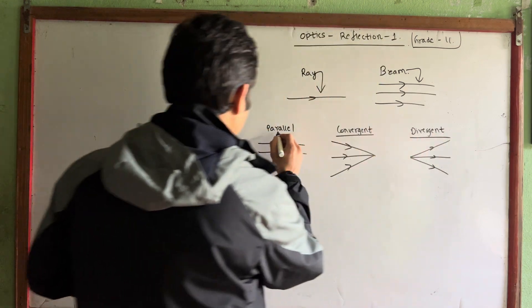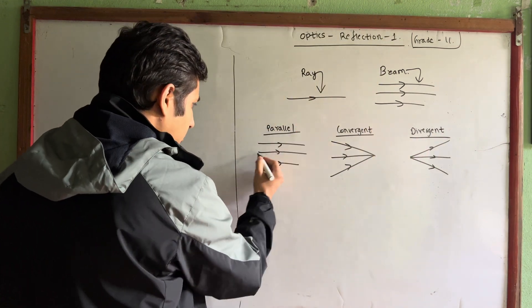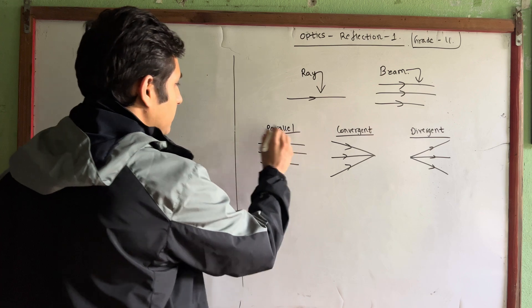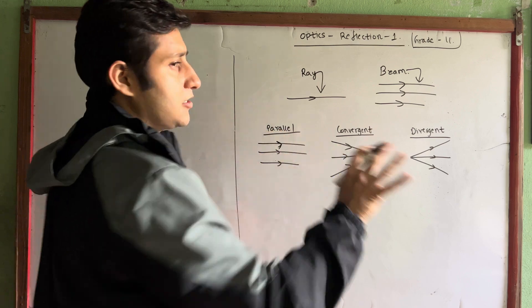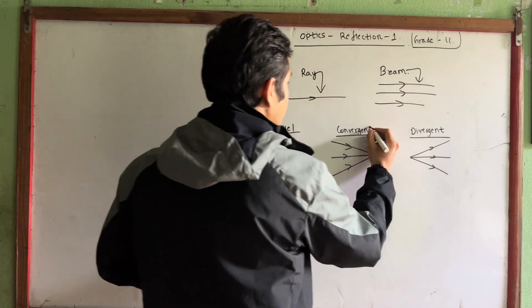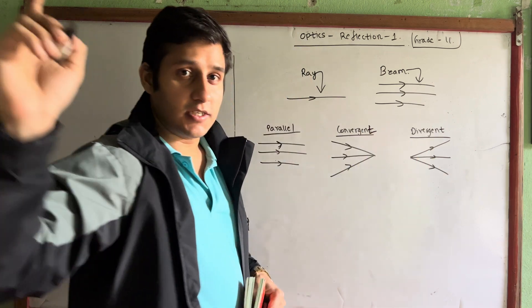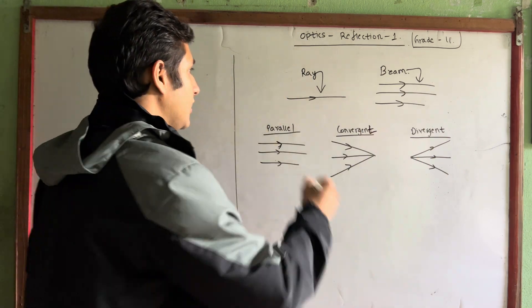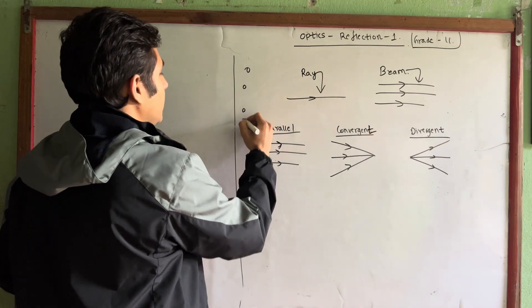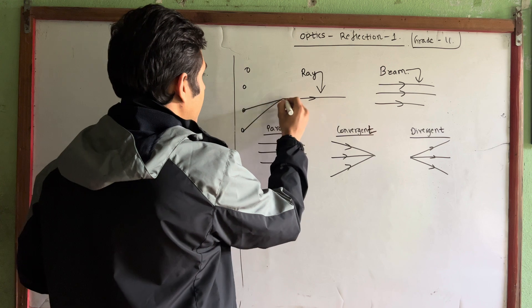Parallel beams travel along the same line. When it splits, convergent is when beams come together to the same line.